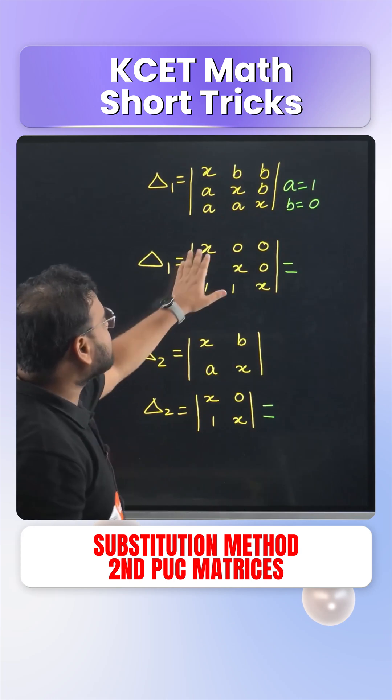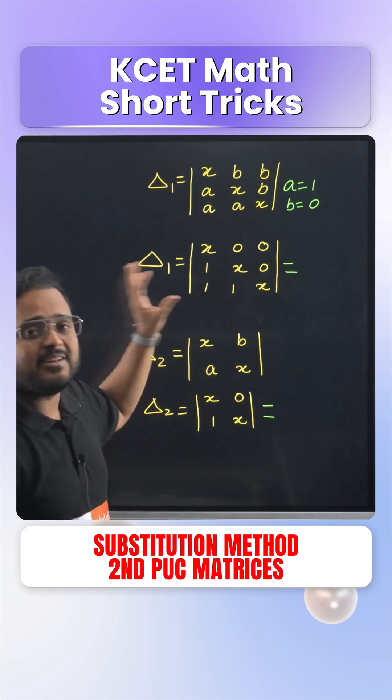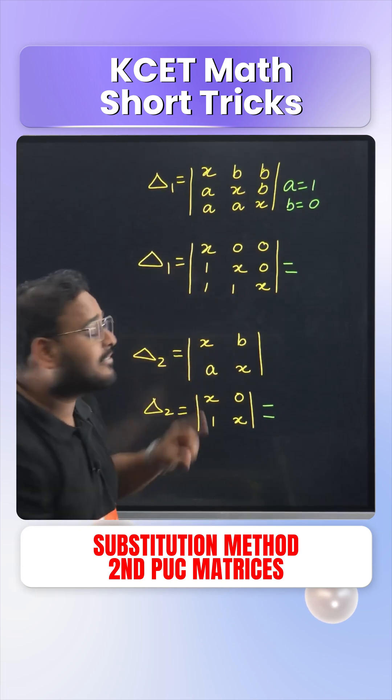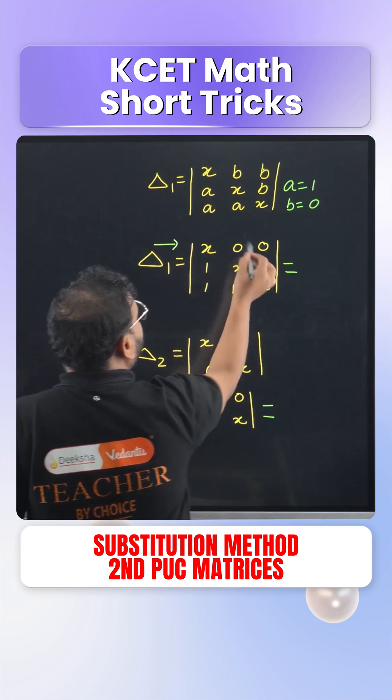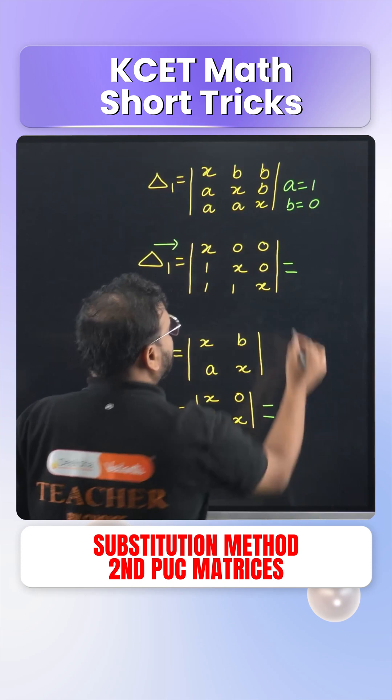our determinant 1 becomes X 0 0 and 1 1 in place of A. We'll try to find the determinant across first row. Why first row? Because the elements over here are 0. Two elements are 0.